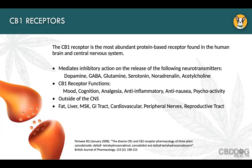The CB1 receptor is one of the most abundant protein-based receptors found in the human brain and central nervous system. It helps mediate both inhibition and modulation of neurotransmitters from dopamine all the way over to acetylcholine. This is important because too much serotonin floating around can cause a serotonin storm — an ugly situation we learned about when we started using drugs like Prozac and serotonin reuptake inhibitors.